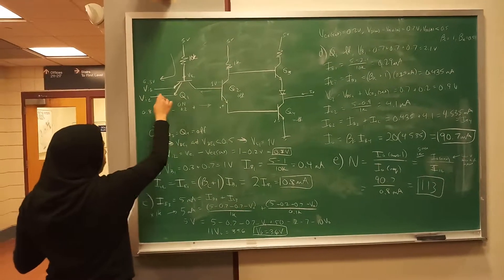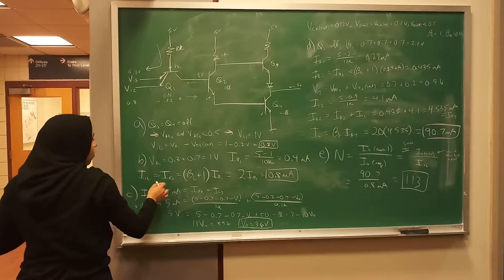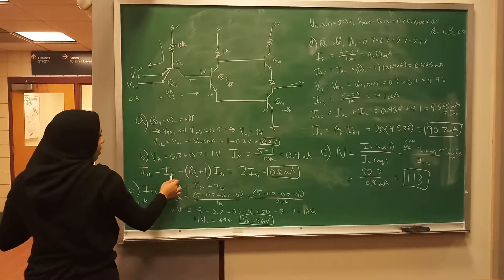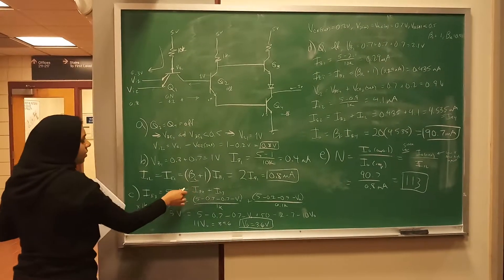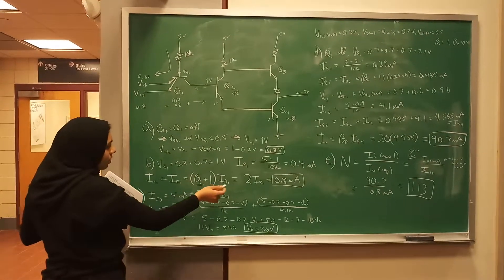And then to get I_input_low, since we're calculating this because we know all the currents are going this way, so it's the same as I_E1. And then you take beta lateral and you multiply because I_E is beta plus 1 times I_B. And then you get this value.